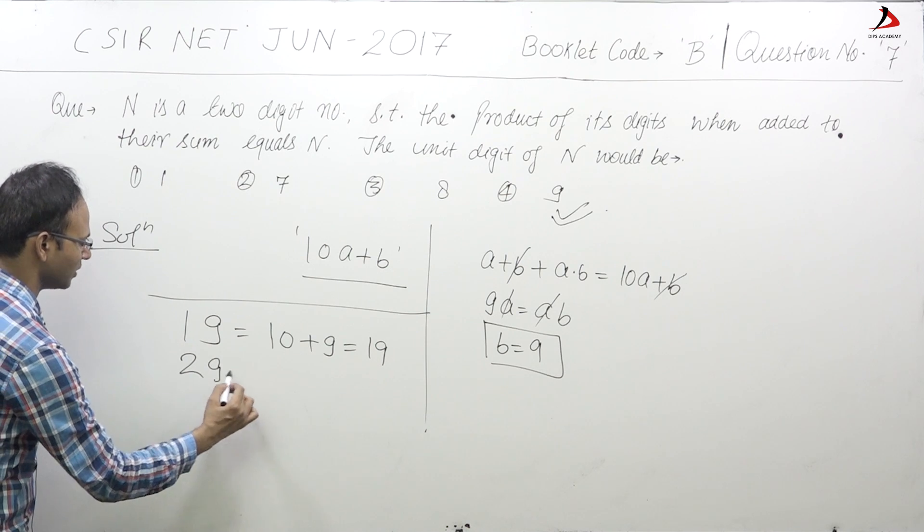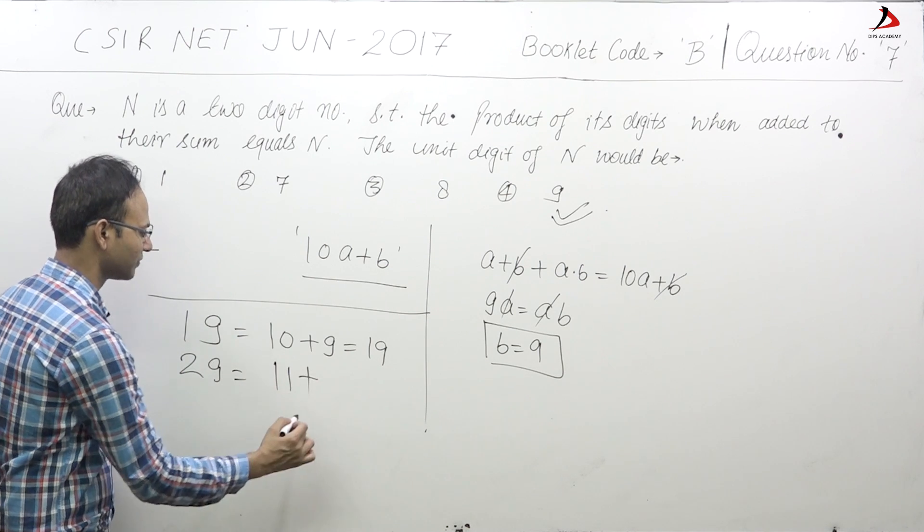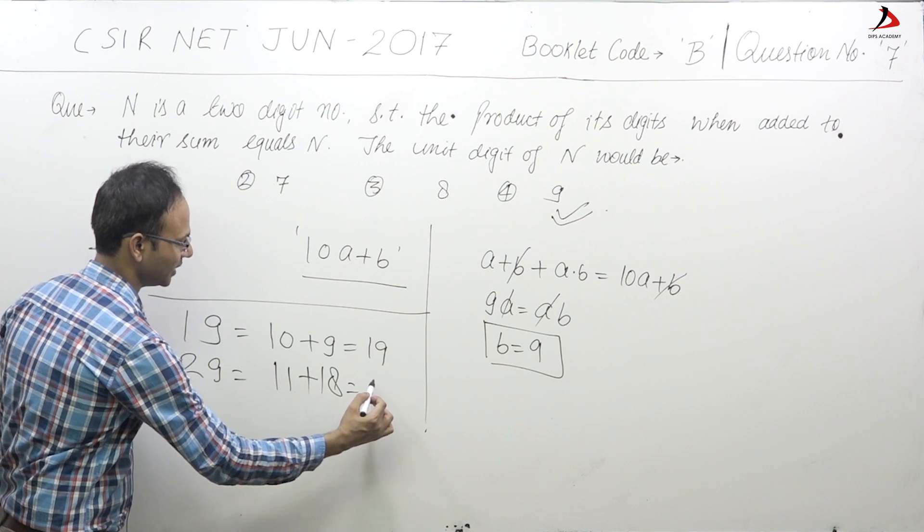Let us take 29. Sum of the digits is 11, product of the digits is 18, the number is 29.